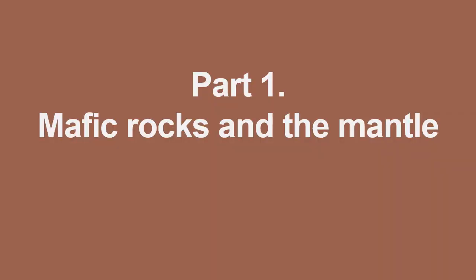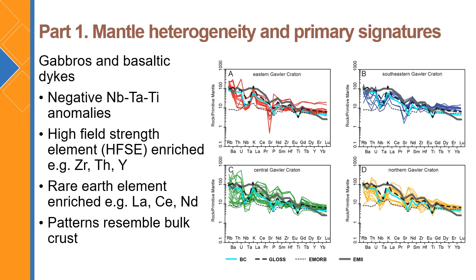Part one: mafic rocks and the mantle. The gabbroic and basaltic intrusive units in the Mafic Hildibus Suite have what we call enriched geochemical signatures, characterised by enrichments in things we would normally associate with the crust rather than the mantle. This includes enrichments in high field strength elements such as zirconium, thorium, and yttrium, as well as the rare earth elements. These signatures produce spiky patterns in their trace element compositions on primitive mantle normalised diagrams. The patterns within these mafic rocks appear to resemble bulk crust, shown by that thick light blue line.